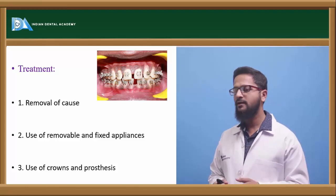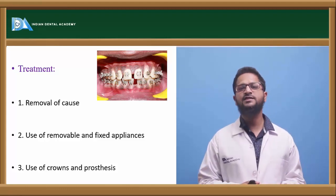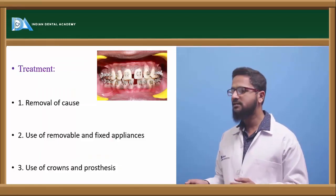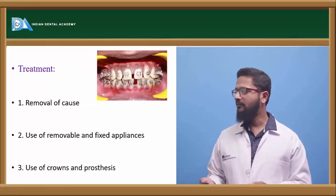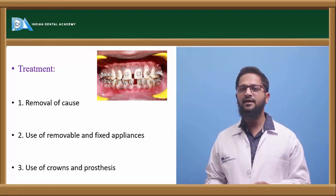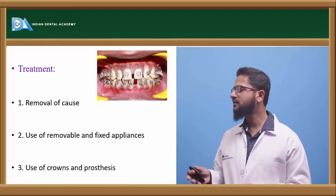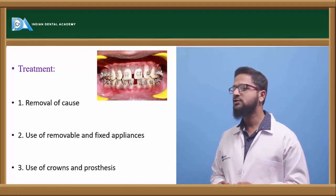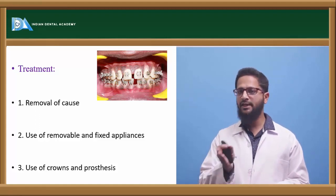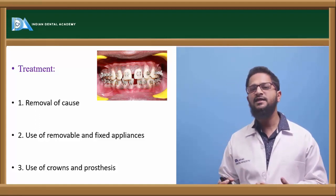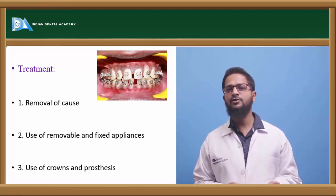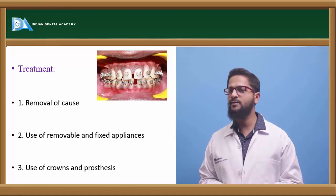Fixed appliances can best treat spacing. Brackets are placed onto the teeth, wires are inserted, and by using various types of E-thread, E-chains, and ligature wires, these spaces can be closed. Finally, use of crowns and prostheses — under circumstances where spacing is occurring because of abnormal shape or form of the teeth, it is better to replace the teeth by giving prosthetic crowns or by doing cosmetic restoration.